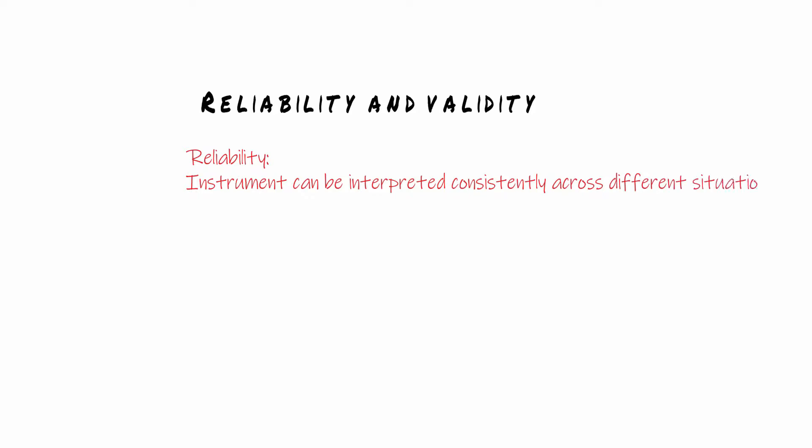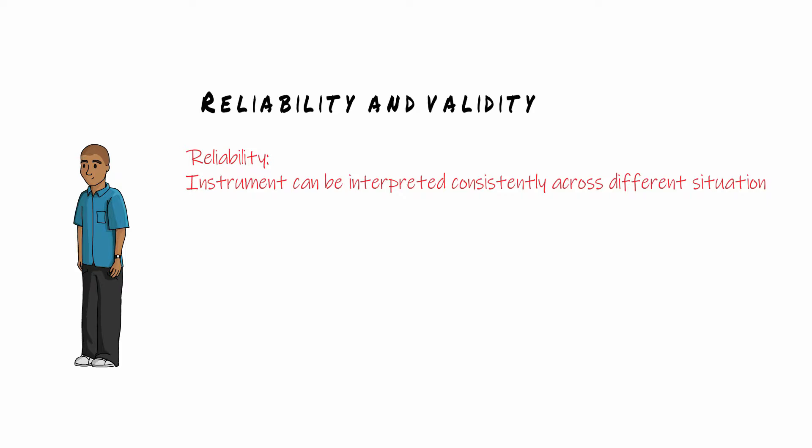So let's say you want to measure someone's height and you want to use a ruler to do it. You measure him on three separate occasions and you get 180 cm, 180.1 cm and 179.9 cm. The measurements are very close together so you can say okay this measurement instrument I'm using, which is a ruler, is a reliable measurement instrument.